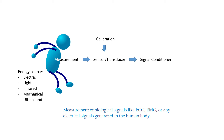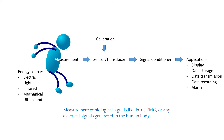Then we need a signal conditioner. Signal conditioner circuits are used to convert the output from the transducer into an electrical value, so the instrument system sends this quantity to a specific application.